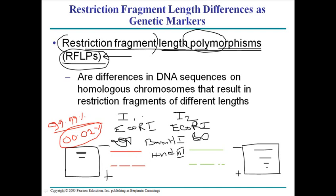RFLP can also be used to identify diseases. For example, in sickle cell anemia there is a change in one amino acid sequence, which means a base substitution has taken place at the genomic level. Due to that base substitution, if we add a restriction enzyme that cuts at that substitution region, we will find different fragments. From those different fragments we can determine whether a person carries the allele for that disease.